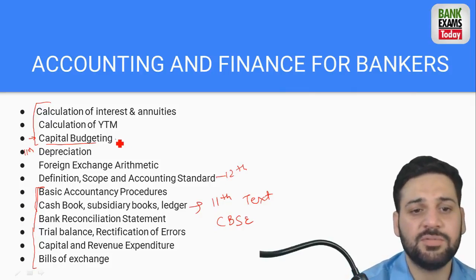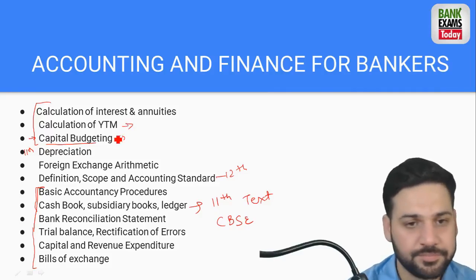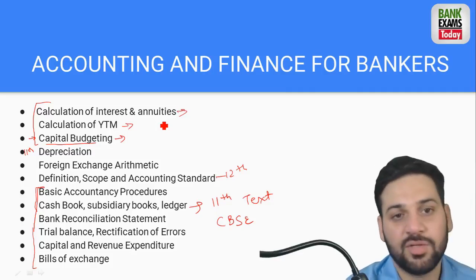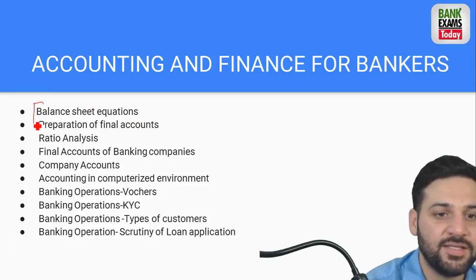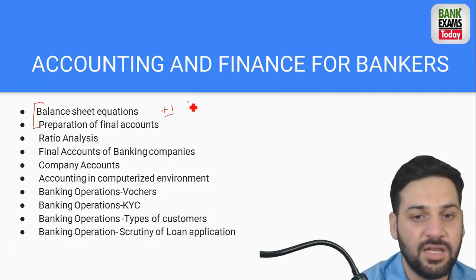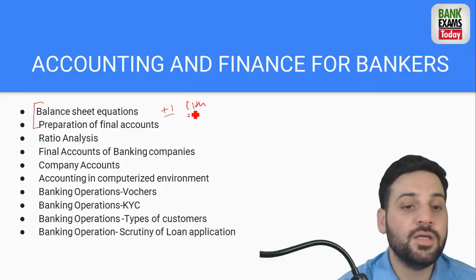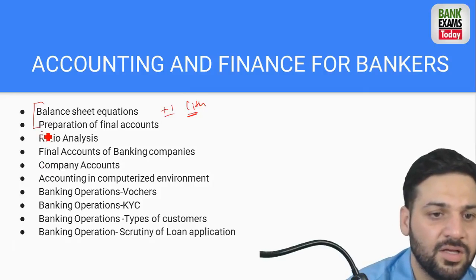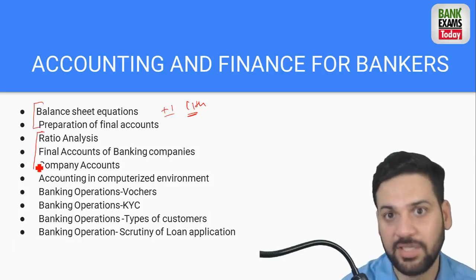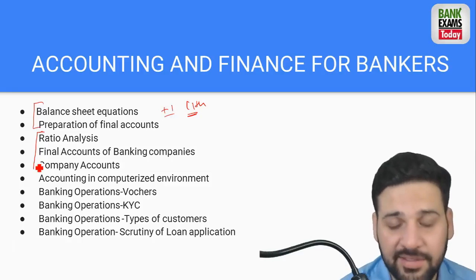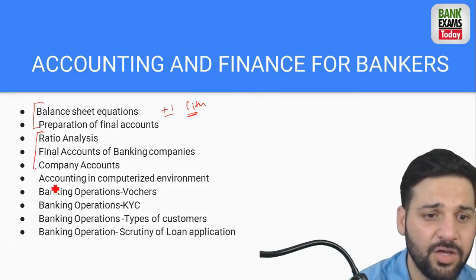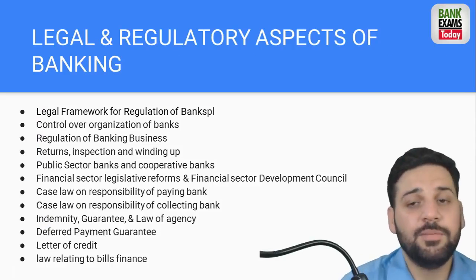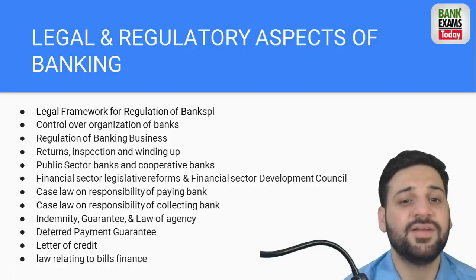For Plus Two commerce students this is easy. Capital budgeting and YTM are topics at graduation level - the rest is all up to 12th standard accounts. The calculation of interest topics - overall this is 11th standard accounts. Ratio analysis is very easy. For banking operations and regulation of banks topics - basically let me tell you what needs to be studied in the legal paper.